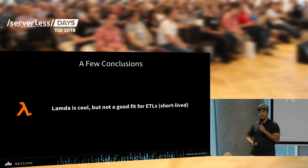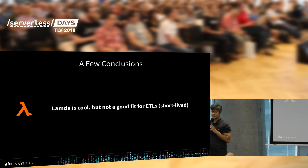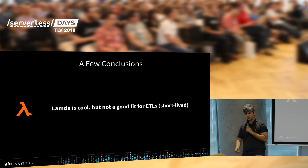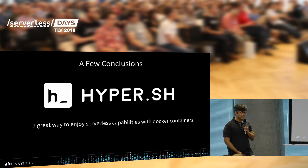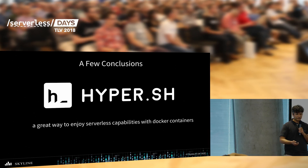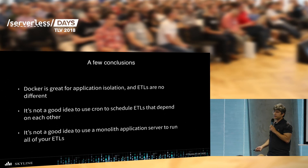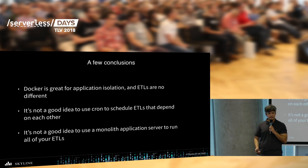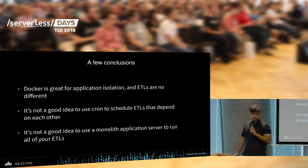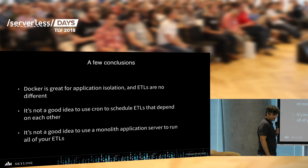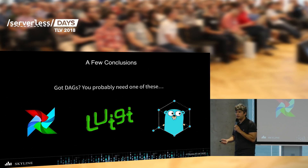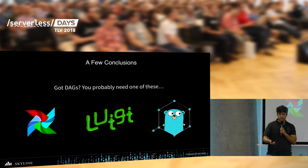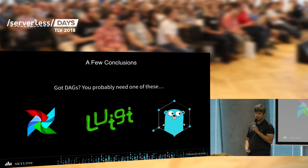A few conclusions: Lambda is cool — we're using it in our front-end web application — but it's not a good fit for ETLs because it's designed for short-lived requests, and ETLs typically take anywhere between a few minutes to a few hours. HyperShell is a great way to enjoy serverless capabilities with Docker containers — super easy to use and very effective. Docker is great for application isolation, and ETLs are no different. It's not a good idea to use plain old Cron to schedule ETLs that depend on each other, and it's also not a great idea to use a monolith application server to run all your ETLs. Finally, if you have any DAG flows in your application — whether or not they're ETLs — you probably want to check out one of these platforms. Thank you guys.